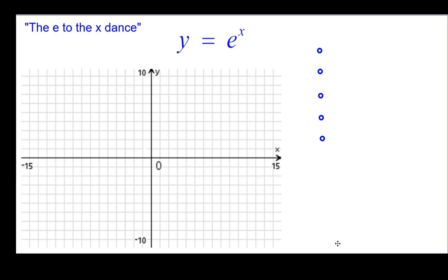For the e to the x dance, we're going to have five points, starting with the y-intercept. When x is 0, y is 1, e to the 0 is 1. So from the origin, we'll write 1 and up 2.7, e is about 2.7, a little bit bigger than that. Right 2 up 7.4, 2.7 squared is about 7.4. Left 1, this is the reciprocal of e, about 4 tenths. And left 2, up about 0.14, which is pretty close to zero already. So those are the five key points for the e to the x dance.